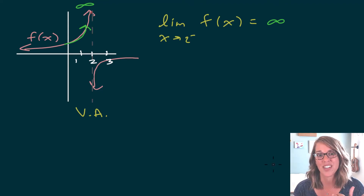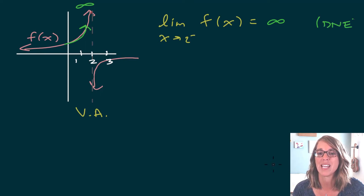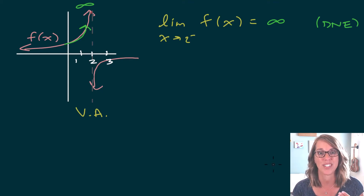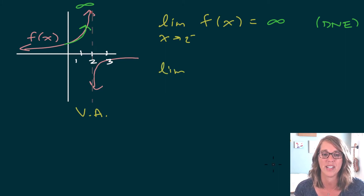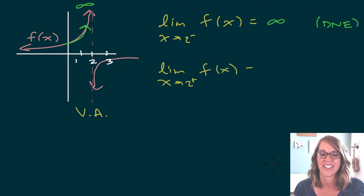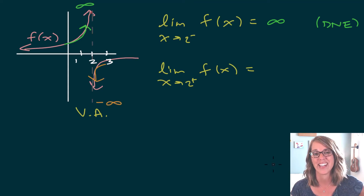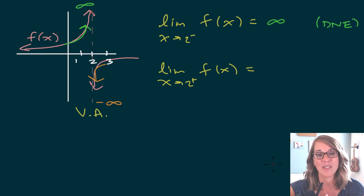Now, if that sounds contradictory, you are correct — technically this limit does not exist. But we can describe the behavior by saying it goes towards infinity. On the other side, the limit as x approaches 2 from the right of f of x: I'm on the right-hand side, following that graph, and this one goes down infinitely. So that y value doesn't exist, but I can describe the behavior as negative infinity.